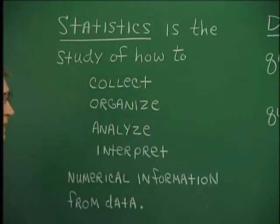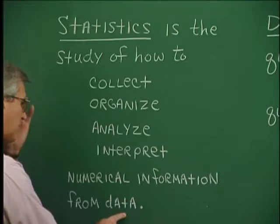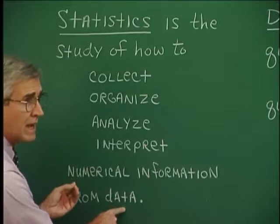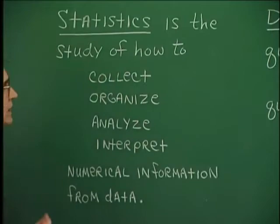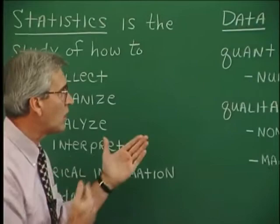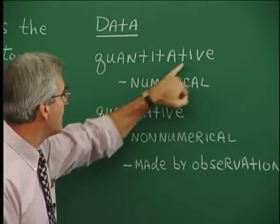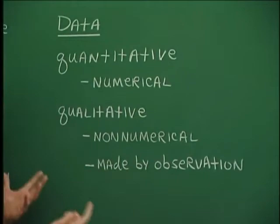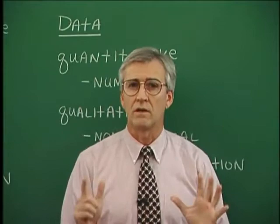You might be thinking: numerical information from data — I thought information and data meant the same thing. Well, sort of it does, but the numerical information from this overall body of information is what we're talking about in performing the tasks involved in statistics. Data can be quantitative or numerical in nature, and qualitative. Quantitative refers to numerical measurement of data. Qualitative refers to non-numerical information made by observation — information like the color of hair or colors of cars.